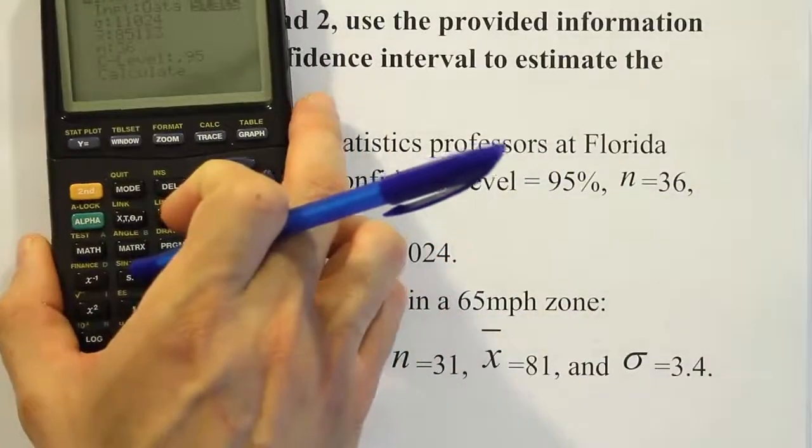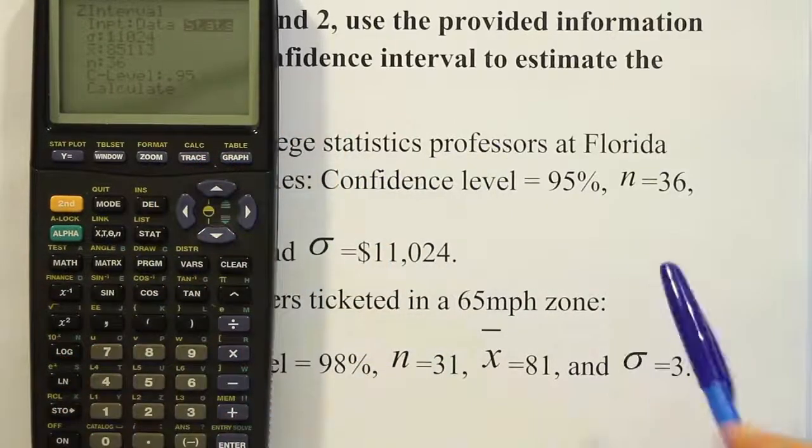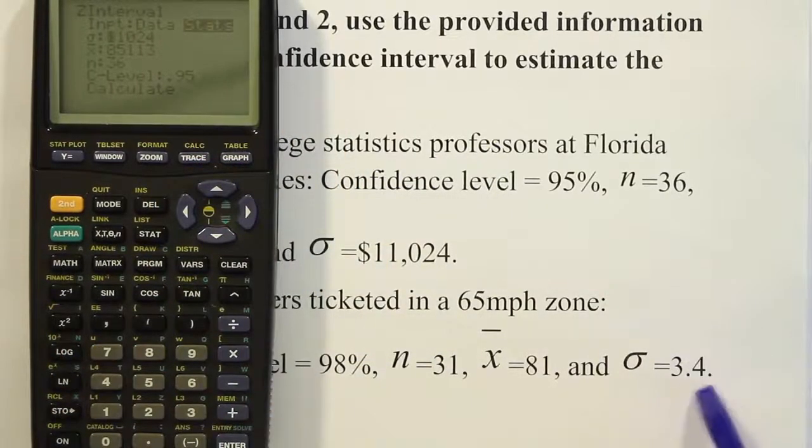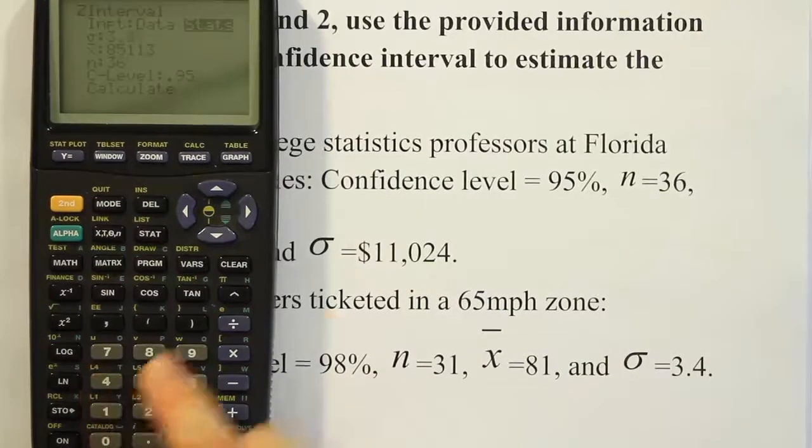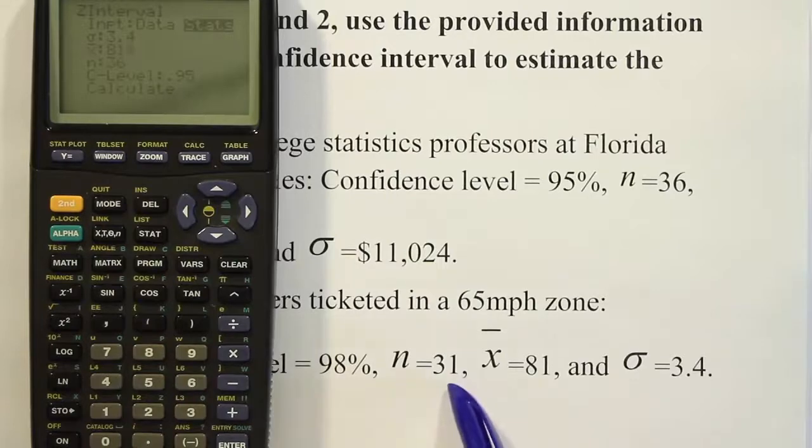I'm just going to move my calculator over here so we can see that stuff. So we're going to look here, it looks like our standard deviation is 3.4. So I'm going to go ahead and enter in my calculator 3.4 for the standard deviation. Push down here, enter the x bar, and the x bar is 81. So I'll type 81.